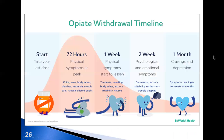Opioid withdrawal symptoms depend on the severity of abuse and the type of psychoactive substances involved. For example, opioid withdrawal can linger for weeks or months.